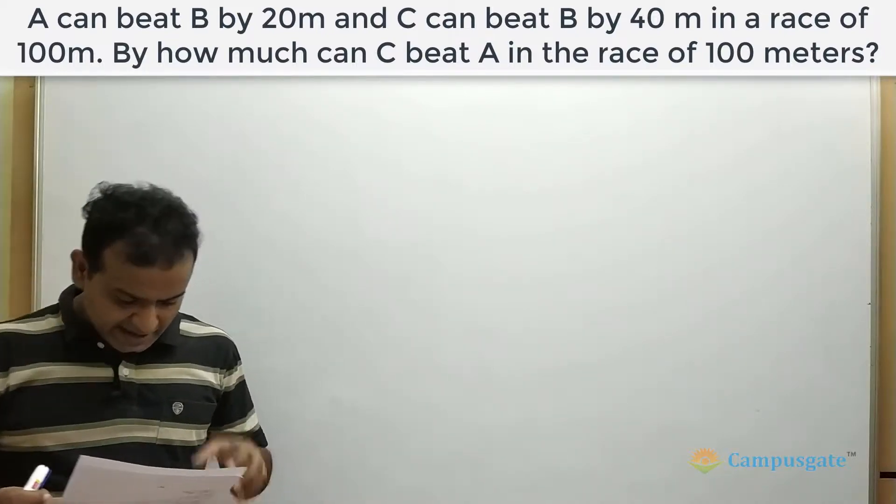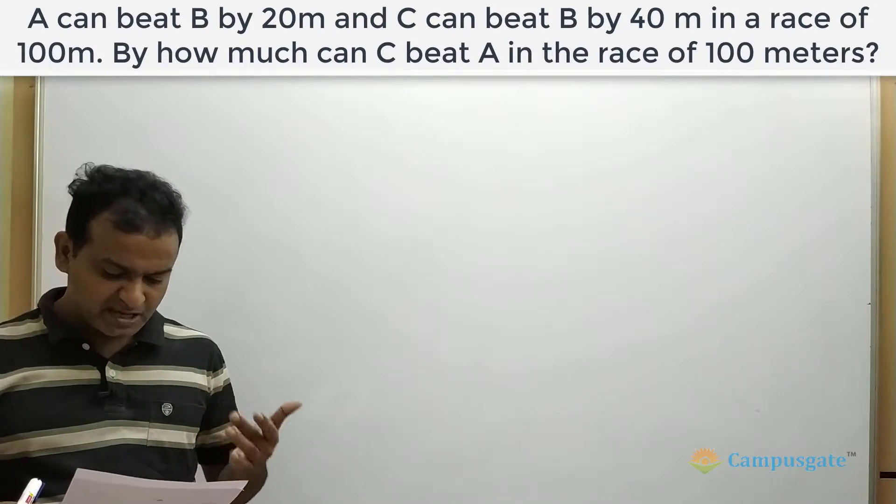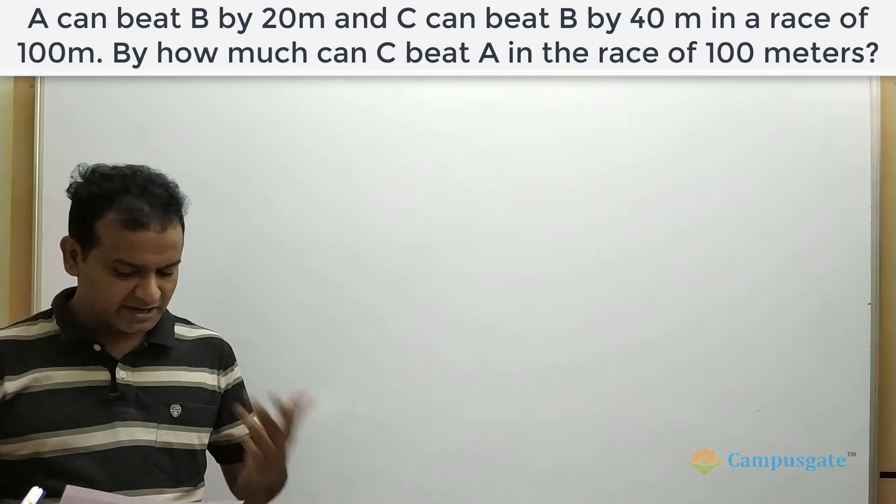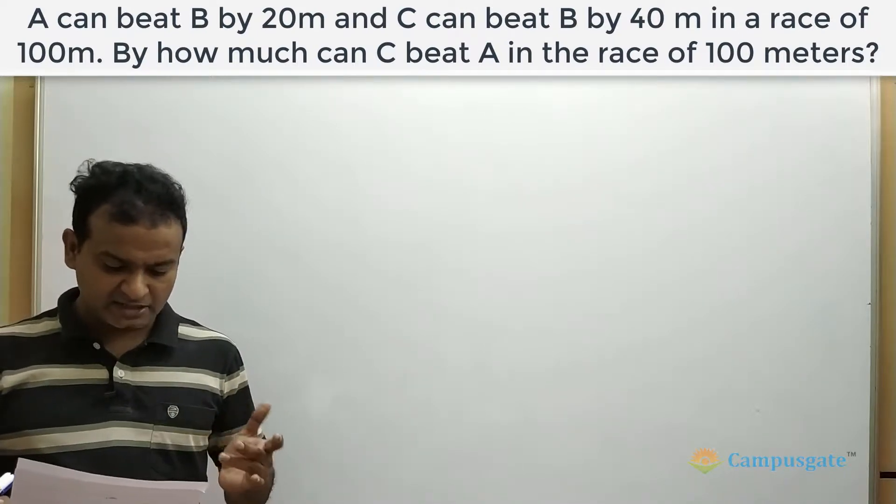Hi, in this question, A can beat B by 20 meters and C can beat B by 40 meters in a race of 100 meters. So we need to calculate by how much can C beat A in a race of 100 meters.